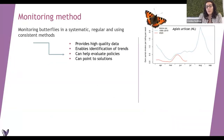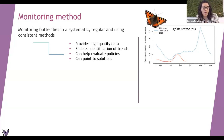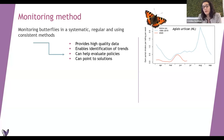The question is which method to use to monitor butterflies, because there are many different ways. We need to select a method that is systematic and regular to produce robust data and results. For example, here I show you a graph of the trend of one species through different years and the comparison with 2020. Thanks to long-term monitoring, we could know how a butterfly is doing in a certain area or region, and we could also evaluate different policies that could help determine conservation solutions or improve butterfly populations.